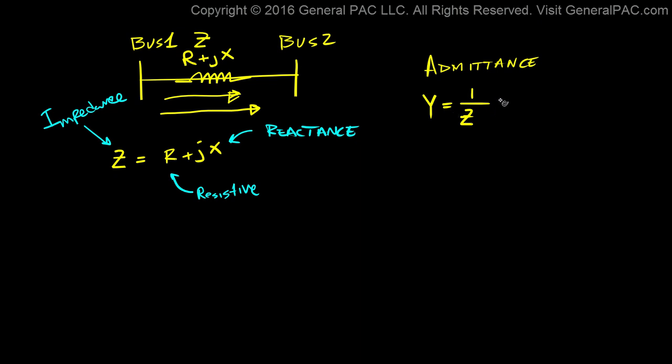So admittance is 1 over the impedance and that also equals g plus jb. Where g is called the conductance and b is called the susceptance.